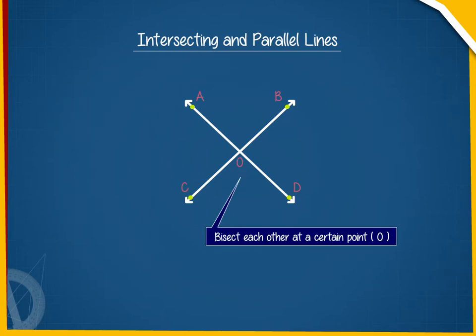In the shown pair of lines, AD and BC intersect each other at the point O. These lines are called intersecting lines.